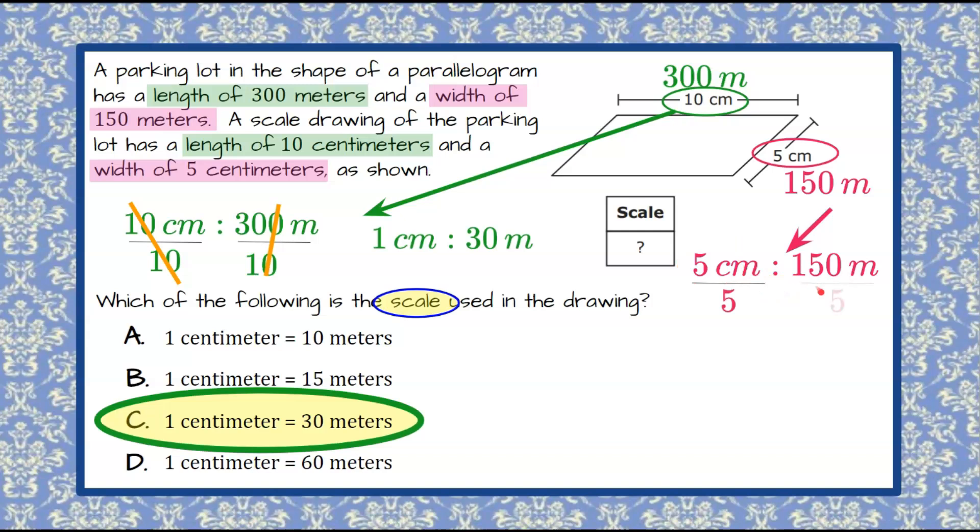So we're going to divide each side by 5. 5 divided by 5 is 1. 150 divided by 5 is 30. So we have 1 centimeter to 30 meters, and it matches.